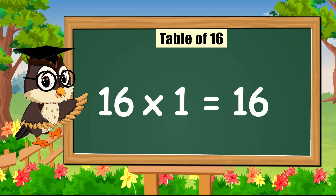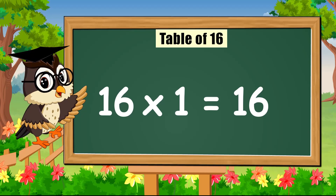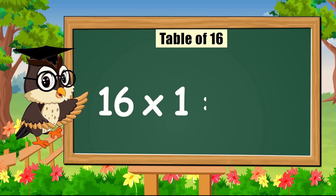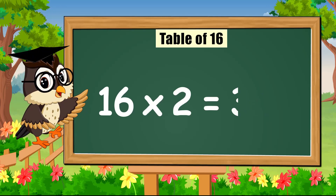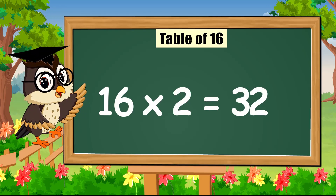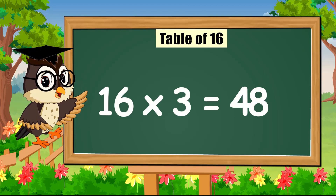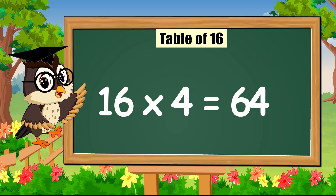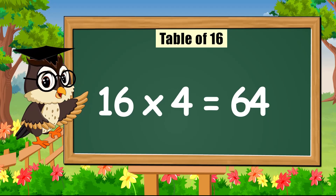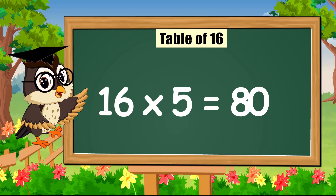Hello everyone, we are going to sing together today. Sing with me the table of sixteen. Come on! Sixteen times one is sixteen. Sixteen times two is thirty-two. Sixteen times three is forty-eight. Sixteen times four is sixty-four. Sixteen times five is eighty.